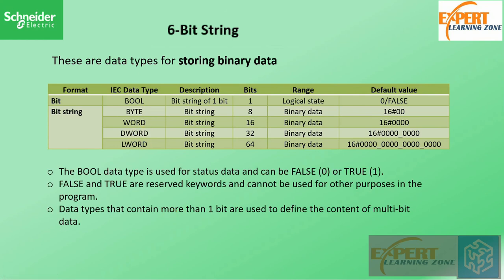The Boolean data type is used for status data and can be false or true. False and true are reserved words, so you cannot use them for any other purpose. Data types that contain more than one bit are used to define the content of multi-bit data.